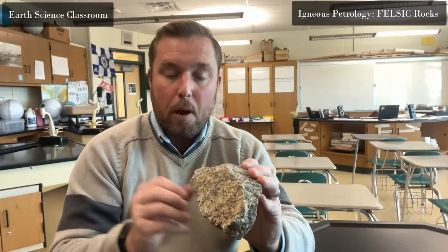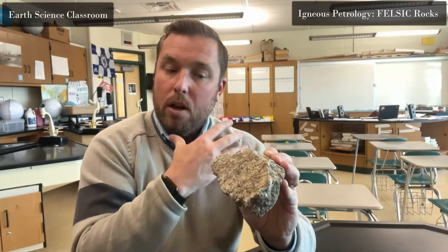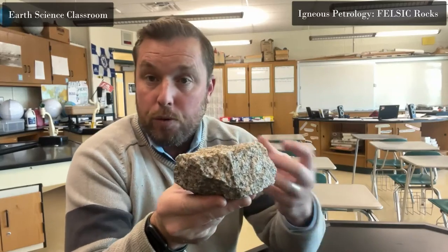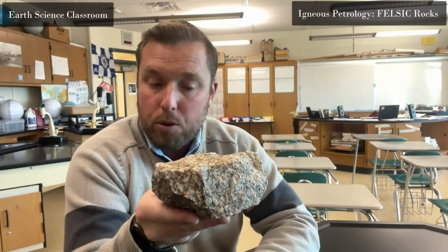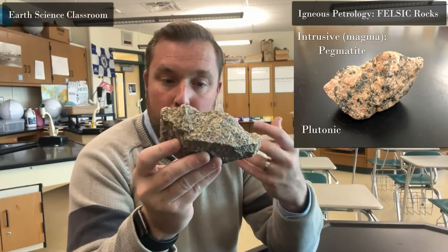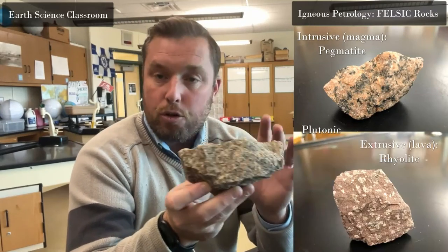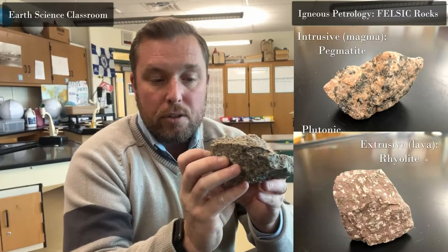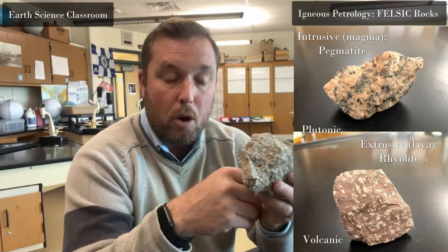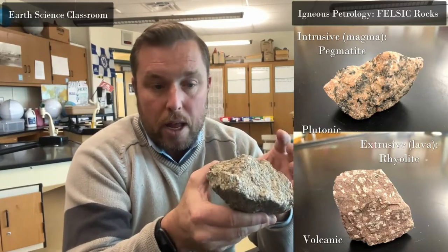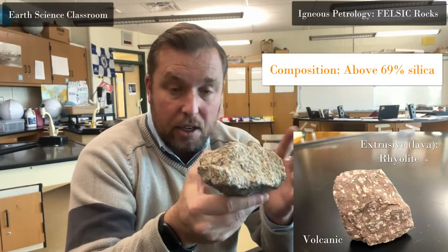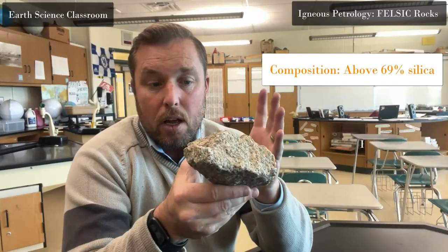When you combine silica and feldspar you get felsic rock. A lot of felsic rocks form through magma, so they are plutonic in nature — they form deep underground from cooling magma over a long period of time. This produces large crystals and mineral formations, and in this matrix you can see the minerals visibly without a microscope.